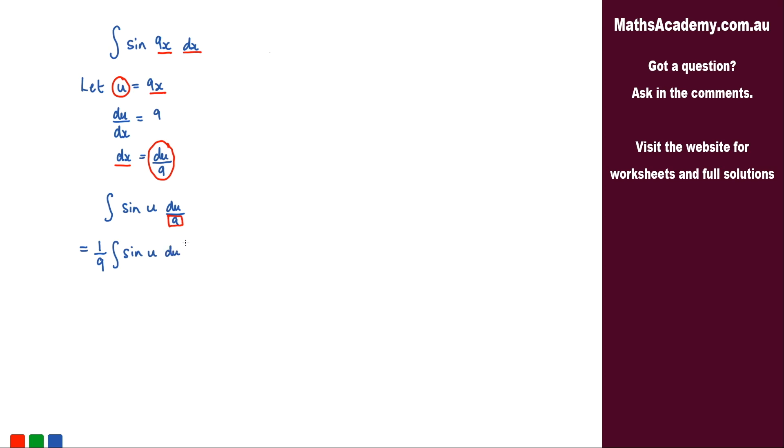The integral of sine is negative cosine. So what I've got is negative 1 over 9 cosine of u.